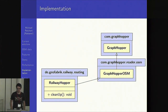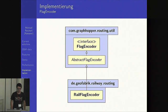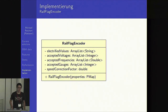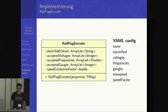Now about implementation. My first step was to derive a class from the GraphHopper OSM class, and later I modified the cleanup method to add turn restrictions at all switch points. A flag encoder is also simple to implement — you just derive a class from the abstract flag encoder class and override a few methods, for example the acceptWay method. The routing can be configured using a YAML file with keys for: the name, which types of electrification are supported, the voltage, the frequency, the gauge, the max speed, and the speed factor.